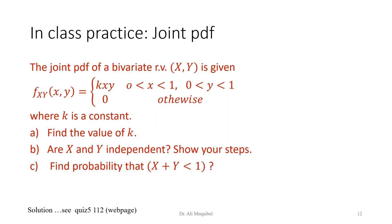In-class practice: the joint PDF of a bivariate random variable (X, Y) is given as a function with constant k. Find the value of k, determine whether X and Y are independent (show your steps), and find the probability that X + Y < 1. Please write your answers in the comments.